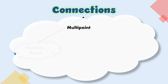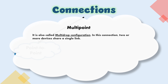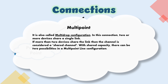Multipoint connection is also called multidrop configuration. In this connection, two or more devices share a single link. If more than two devices share the link, the channel is considered a shared channel. With shared capacity, there are two possibilities: spatial sharing, where several devices can share the link simultaneously, called spatially shared line configuration.